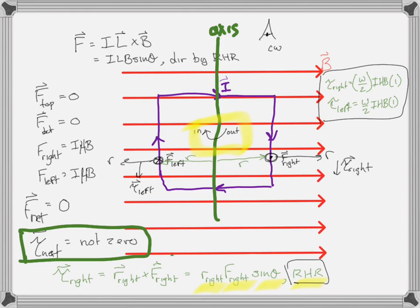The torque is a maximum of IAB and then gets smaller, going to zero. It's not just IAB and then turns to zero at 90 degrees — it gets smaller and smaller as it gets to 90 degrees. But in a frictionless system, when it gets to 90 degrees it has energy because it's moving, so it's going to go past 90 degrees.